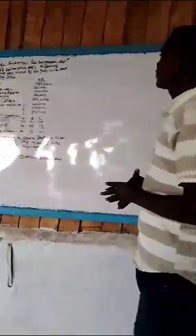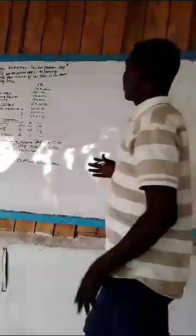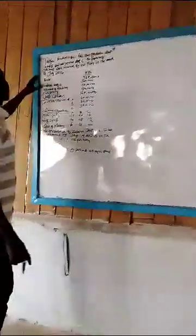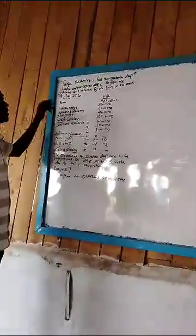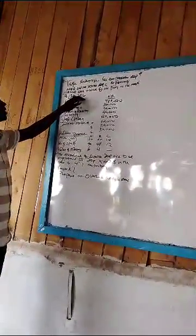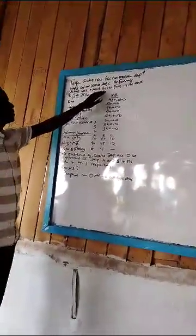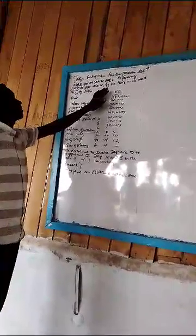The question is about overhead analysis. We are told Taiva Enterprises has two production departments, A and B, and one service department C.